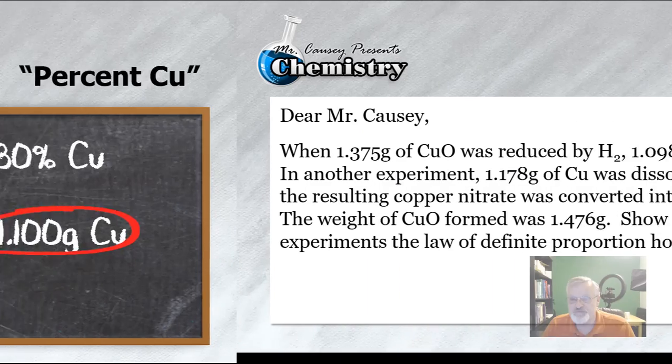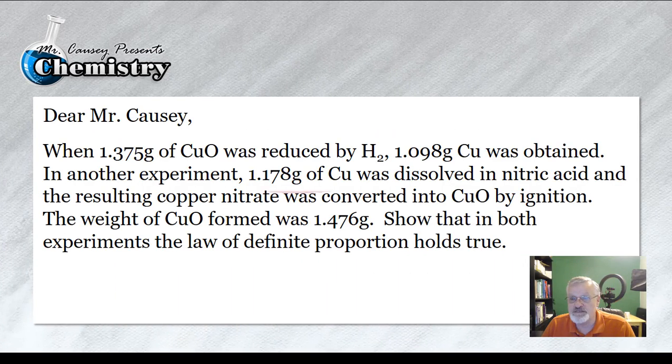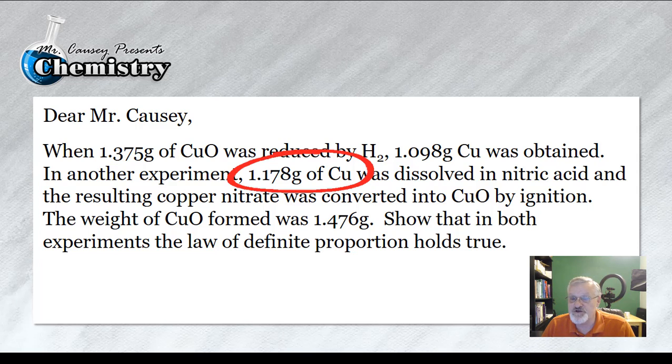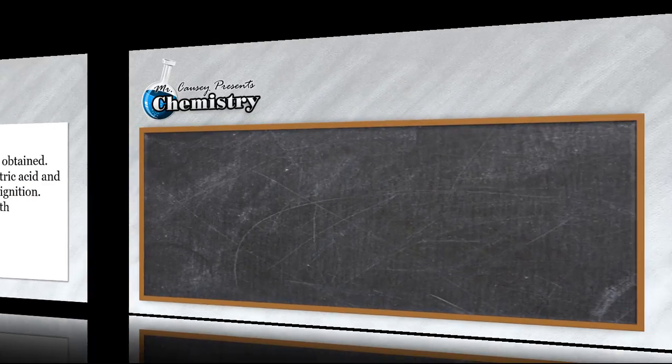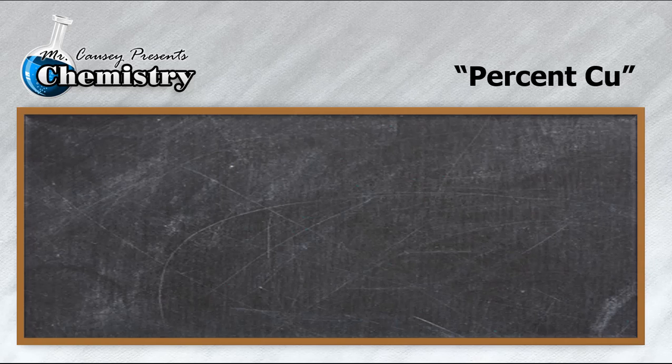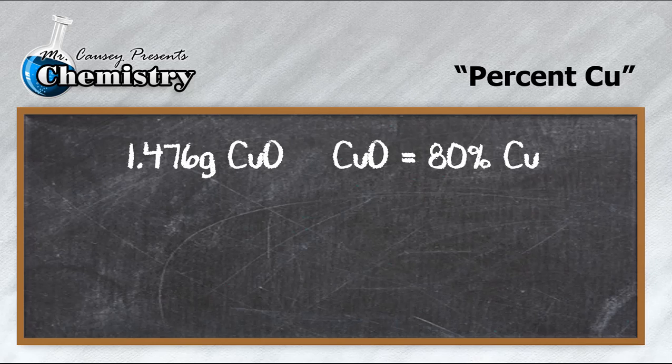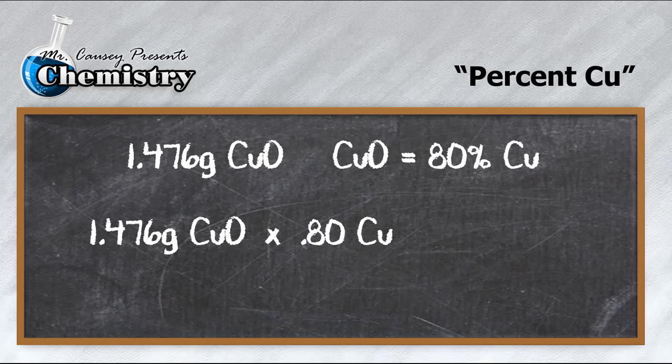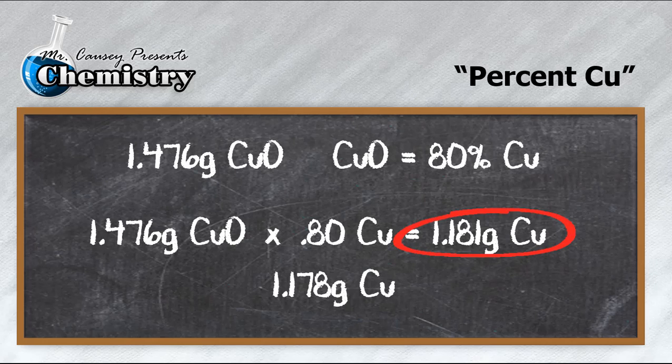Let's go to the other example. Notice we have 1.178 grams of copper and it was dissolved in nitric acid and we got 1.476 grams of copper 2 oxide. To the blackboard. Let's do the percent copper. So we'll take the 1.476 grams of CuO, multiply that by 80% and we have 1.181 grams of copper. How much did we have in the experiment? 1.178.